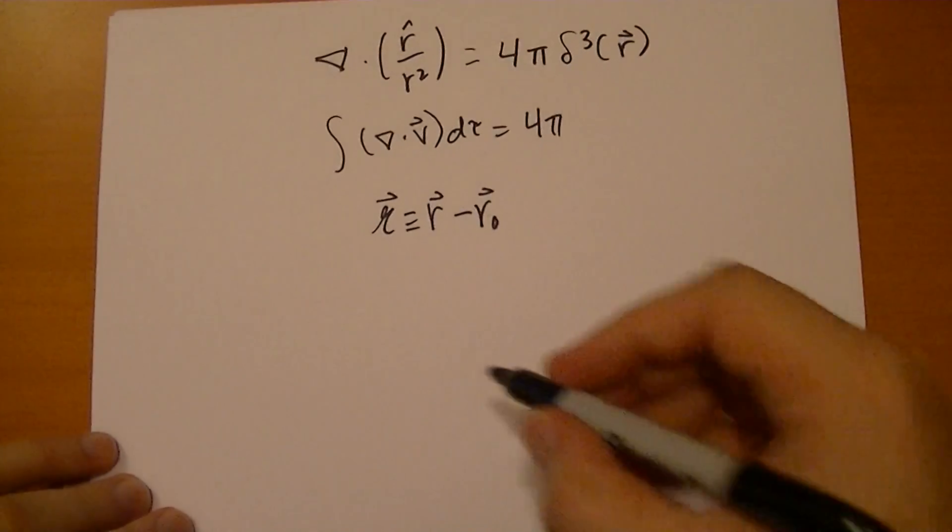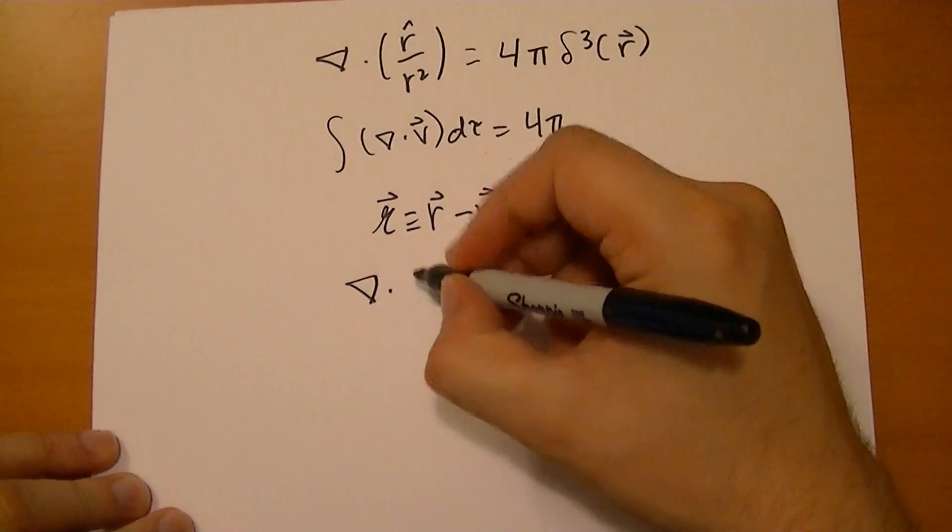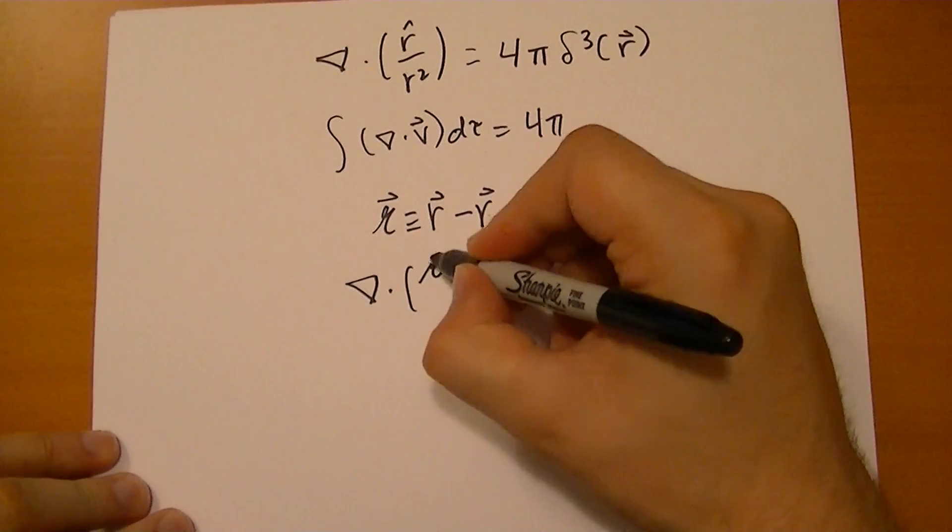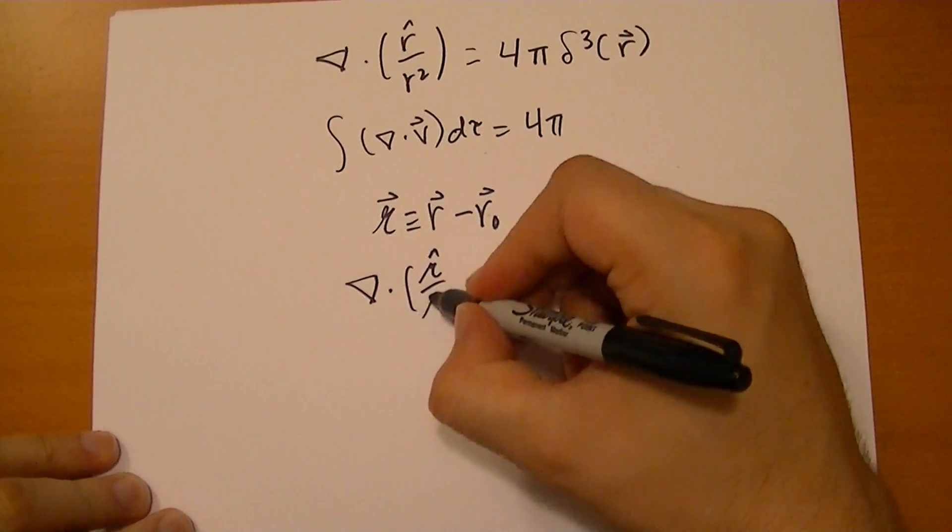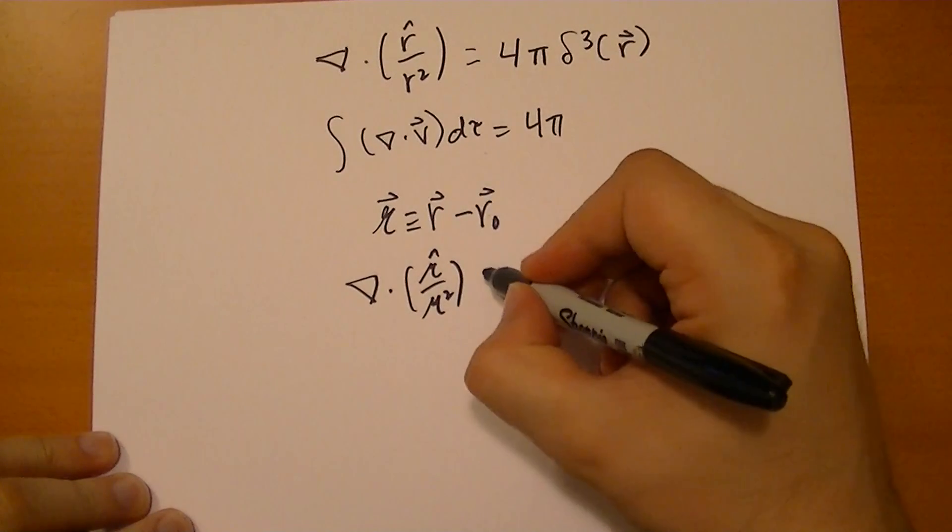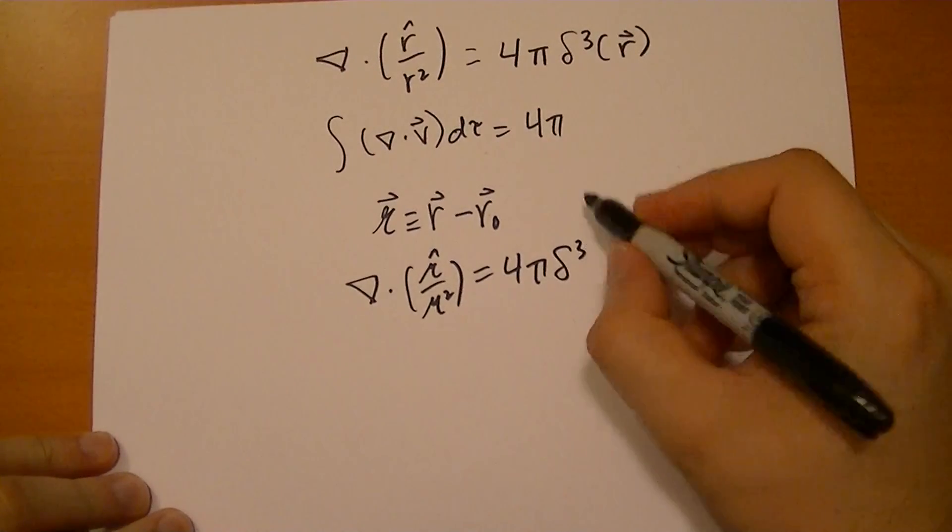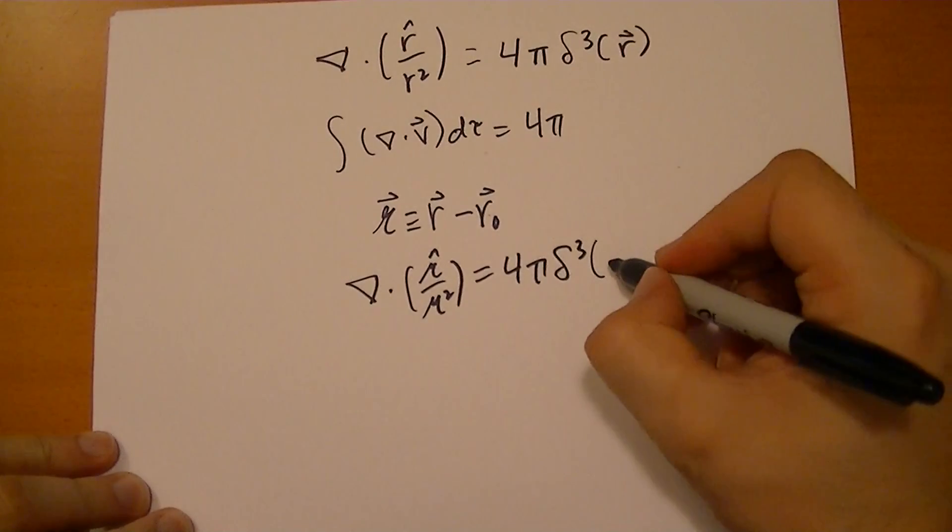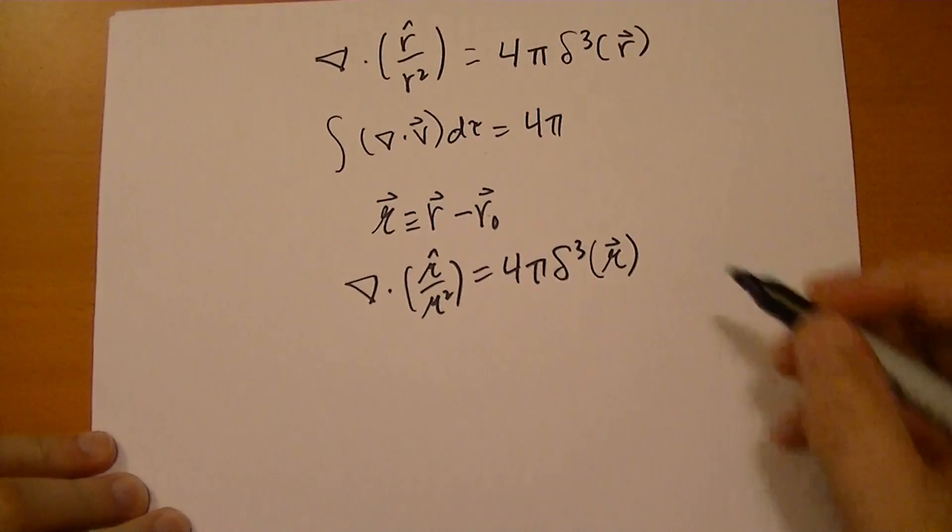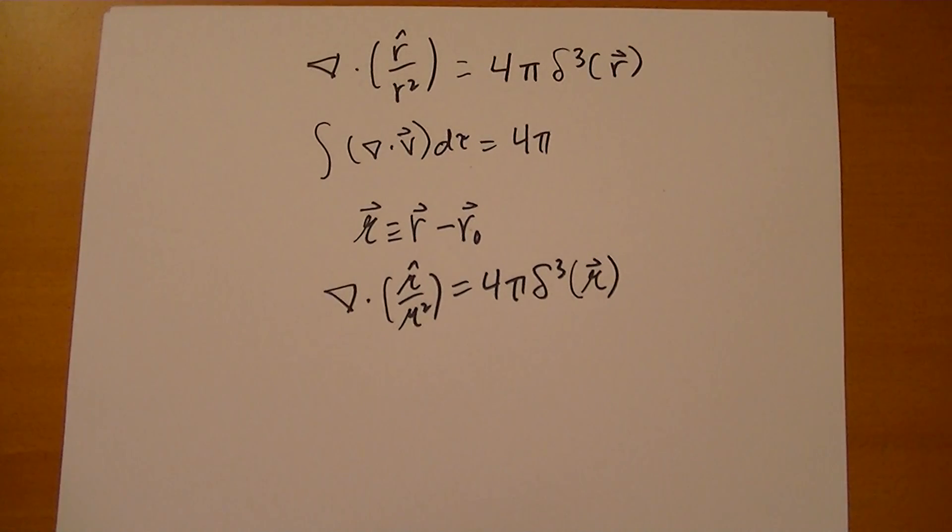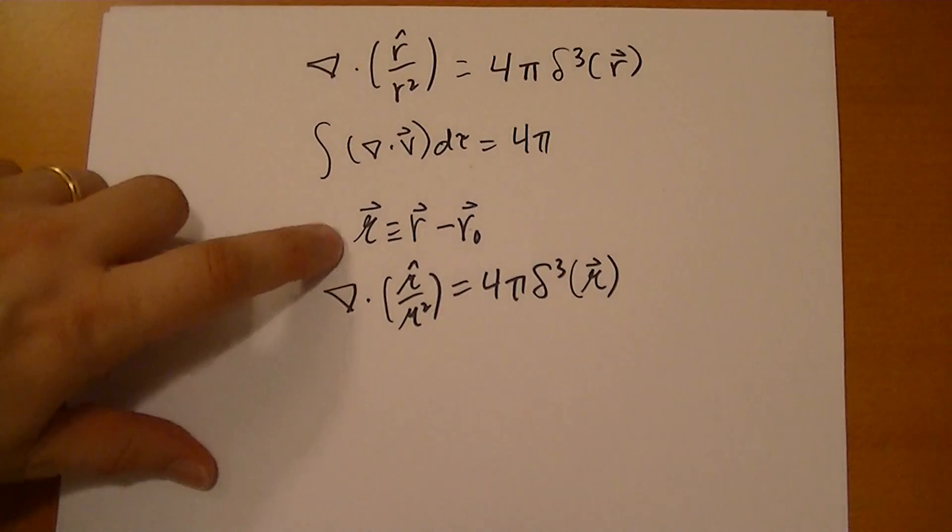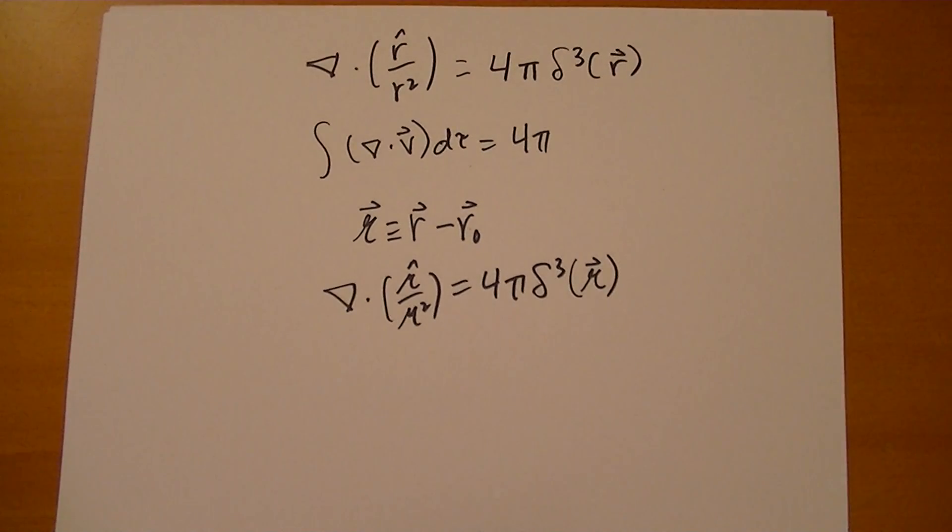Then the divergence of a similar field is always going to be 4π times the Dirac delta function in three dimensions of that r vector. So we're going to use this curly r throughout the book to mean the displacement from some common origin.